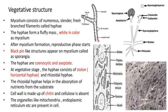The hyphae are coenocytic, meaning no septa are present, so it is called aseptate. At the vegetative stage, the hyphae consist of a stolon, which is a horizontal hypha, and rhizoidal hyphae. The rhizoidal hyphae help in absorption of nutrients from the substrate. The cell wall is made up of chitin; cellulose is absent. Cell organelles like mitochondria, endoplasmic reticulum, ribosomes, and nucleus are all present.